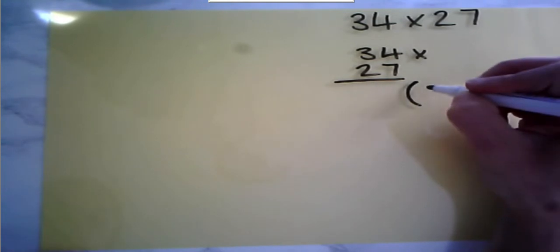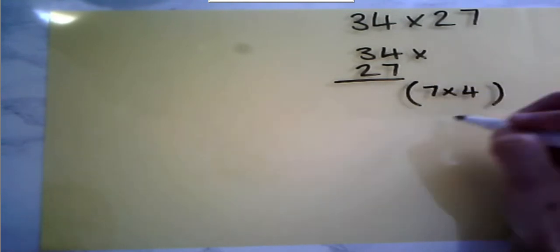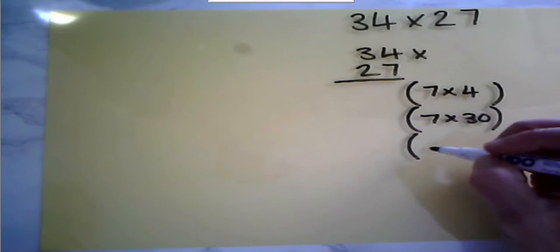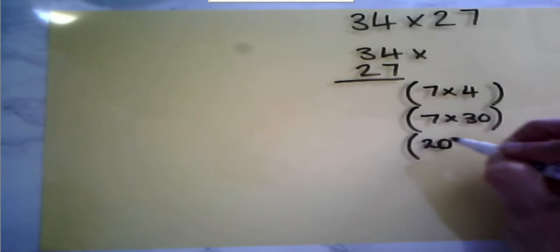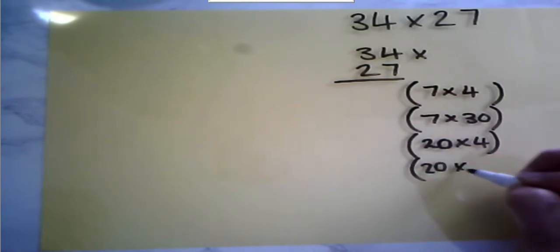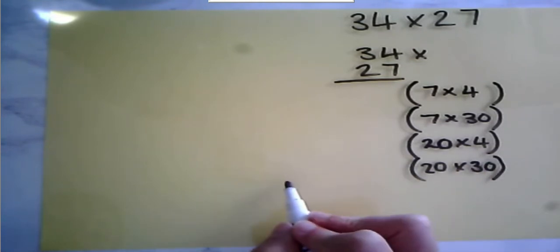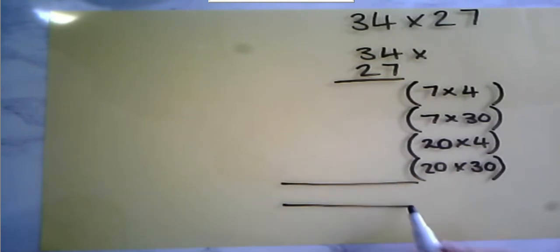So I start off with my ones times by my ones, so my 7×4. Then my ones multiplied by my tens. So I'm partitioning out my numbers. Then I move to my tens, and I'm saying my tens multiplied by my ones, and my tens multiplied by my tens. Then I'm going to put my equals sign.